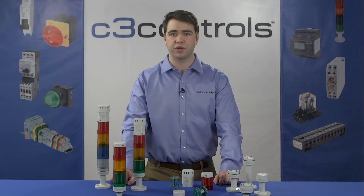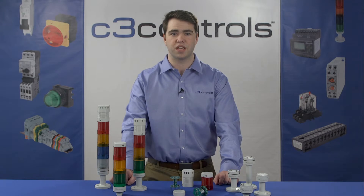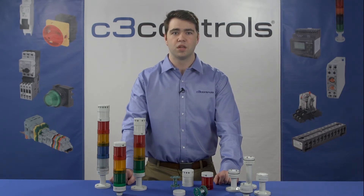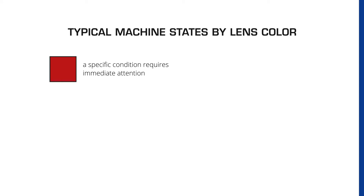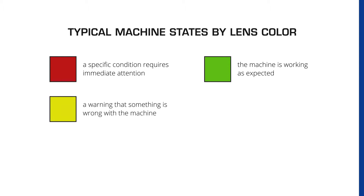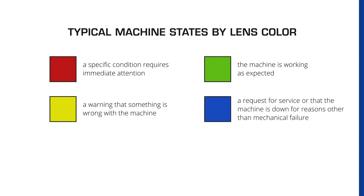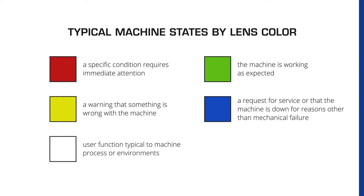Tower lights are equipped with different colored lenses which indicate a typical state of the machine or process environment. Red indicates that a specific condition requires immediate attention. Green indicates that a machine is working as expected. Yellow indicates a warning that something is wrong with the machine. Blue indicates a request for service or that a machine is down for reasons other than mechanical failure. Clear or white indicates user function typical to machines or process environments. These colors are not restricted to these functions, but rather are decided by the system designer in response to machine and operator requirements.